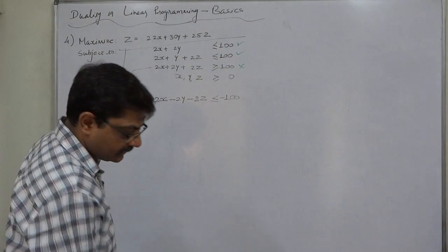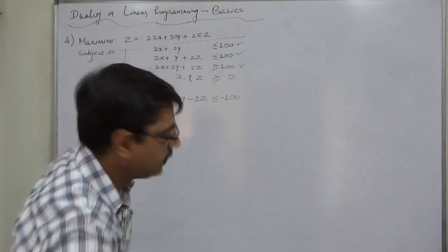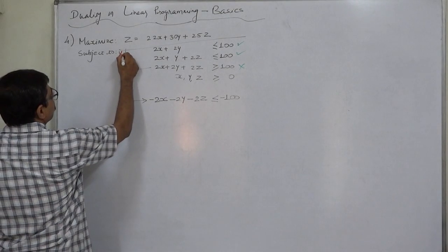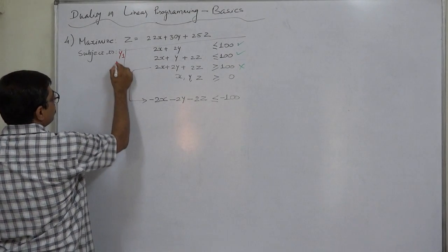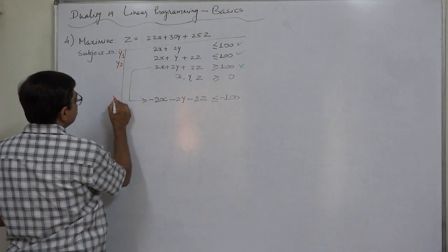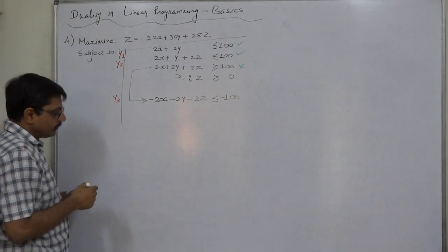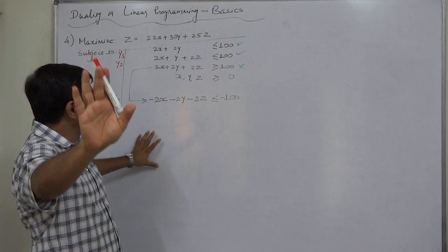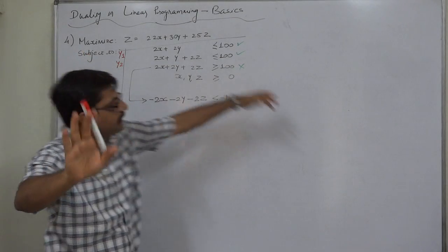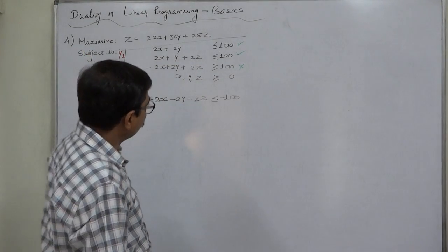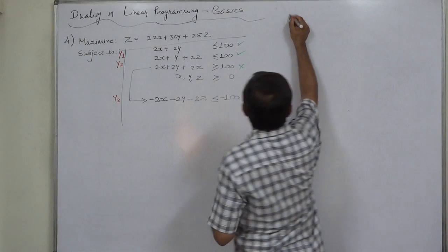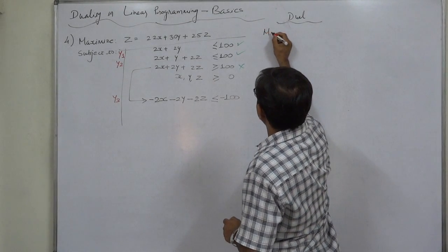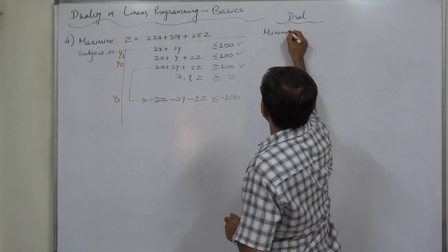We will have three dual decision variables because there are three constraints in the primal. Because there are three decision variables in the primal, we will have three constraints in the dual. So now we can write the dual of this primal. Against the primal's maximization, the dual objective will be minimization.